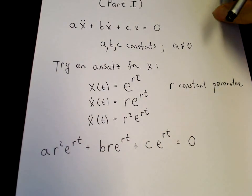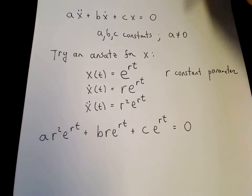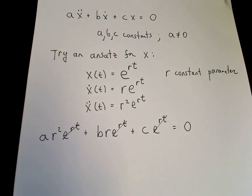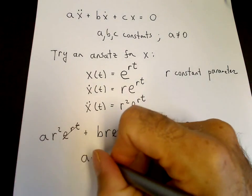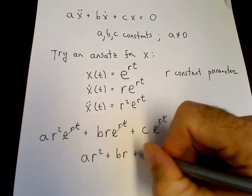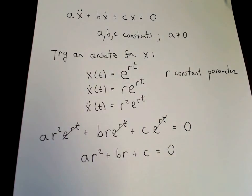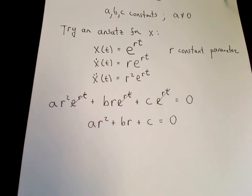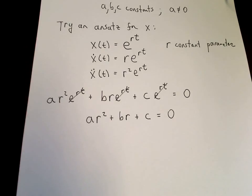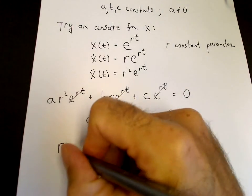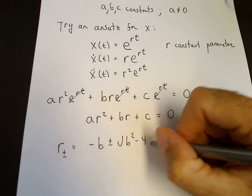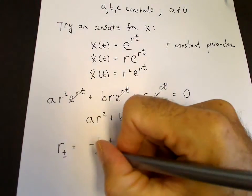We're rewarded by our choice of ansatz — the e^(rt) cancels throughout, leaving us with an algebraic equation for r: a·r² + b·r + c = 0, which is the well-known quadratic equation. We can solve it in the standard way: r = (−b ± √(b² − 4ac)) / (2a).